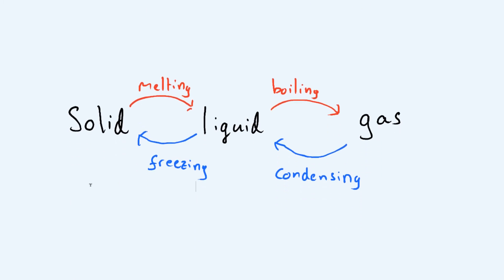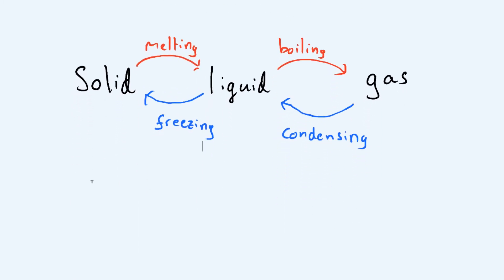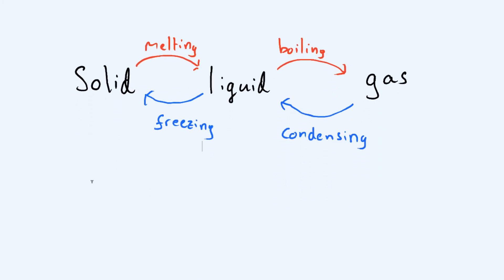I've drawn this little diagram here. We have our three states of matter, which are solids, liquids, and gases. In red it shows that when you turn from a solid to a liquid, that's called melting; liquid to a gas is called boiling. When you go the other way and cool it back down, going from a gas back to a liquid is called condensing or condensation, and going from a liquid to a solid is called freezing.